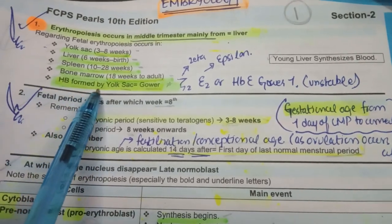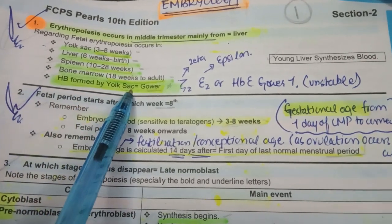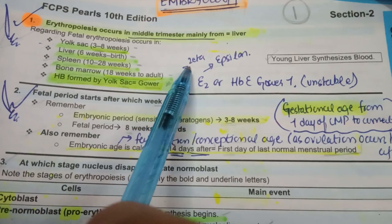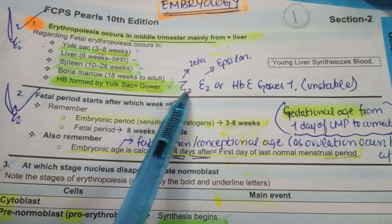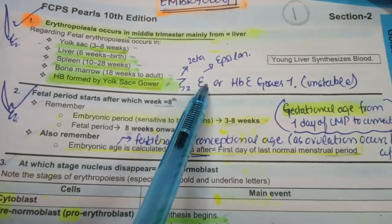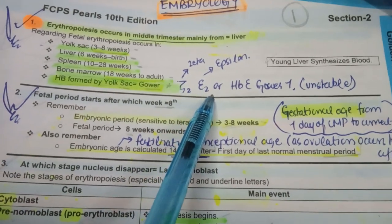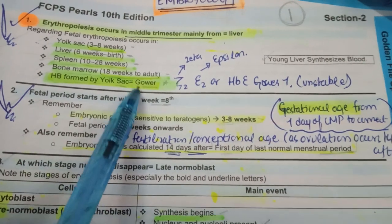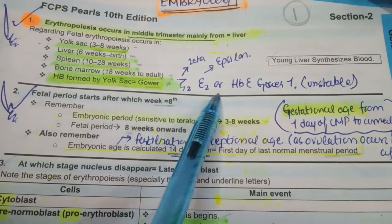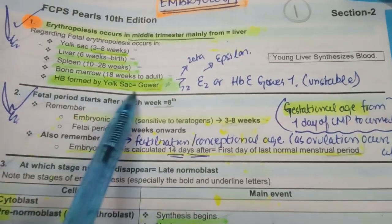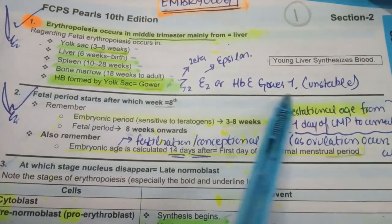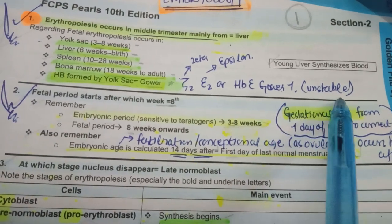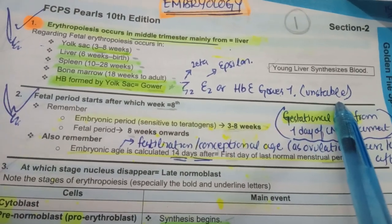The HB formed by the yolk sac is Gower HB. Gower HB's formula is zeta-2 epsilon-2, also known as HB Gower 1. This exists only in embryonic life, formed by the yolk sac, and it is very unstable — it easily breaks down.